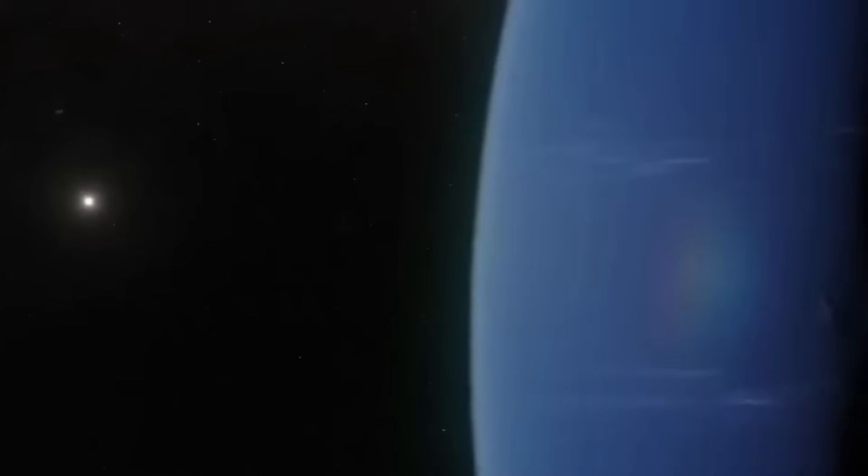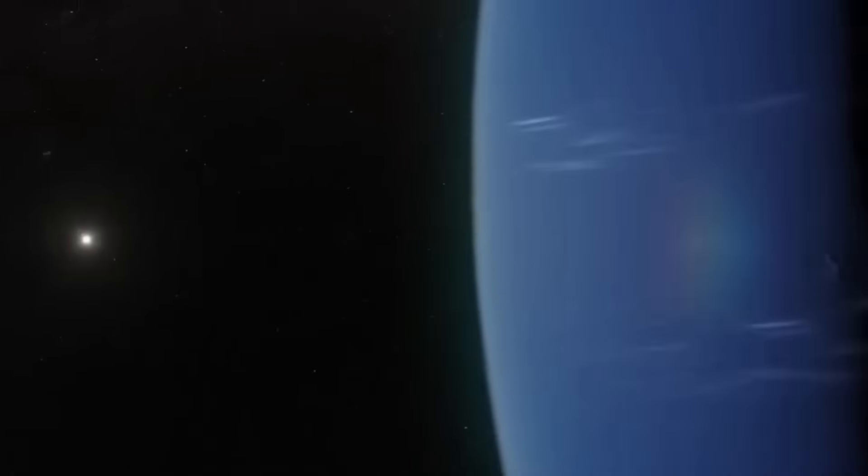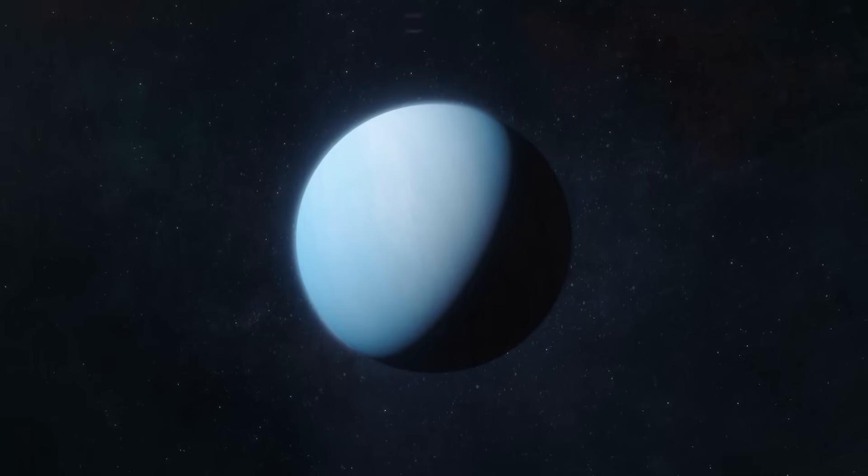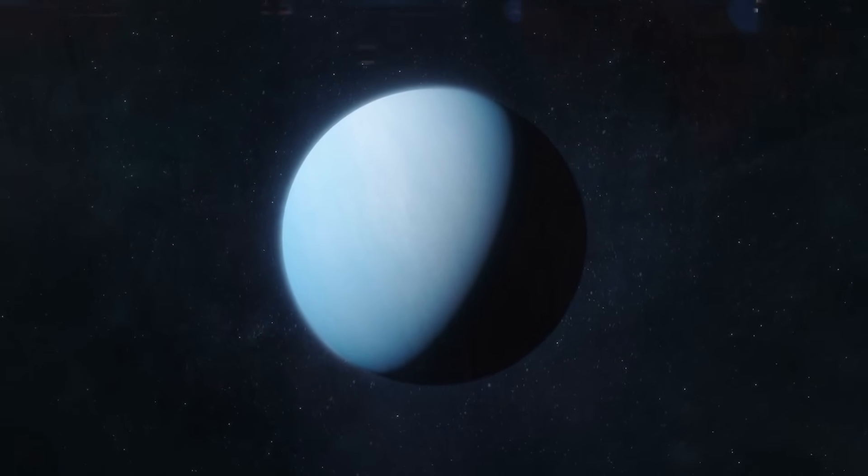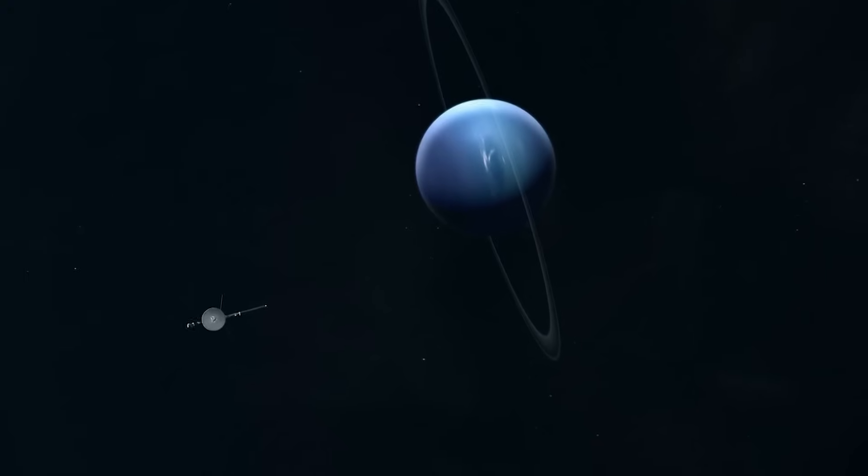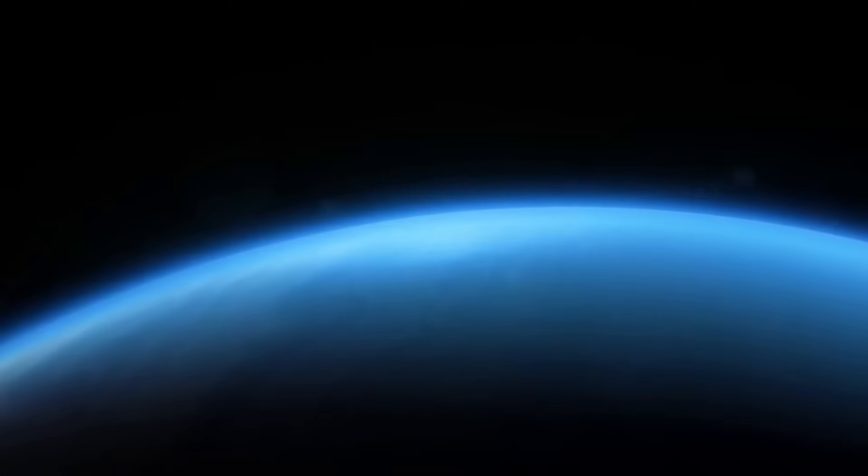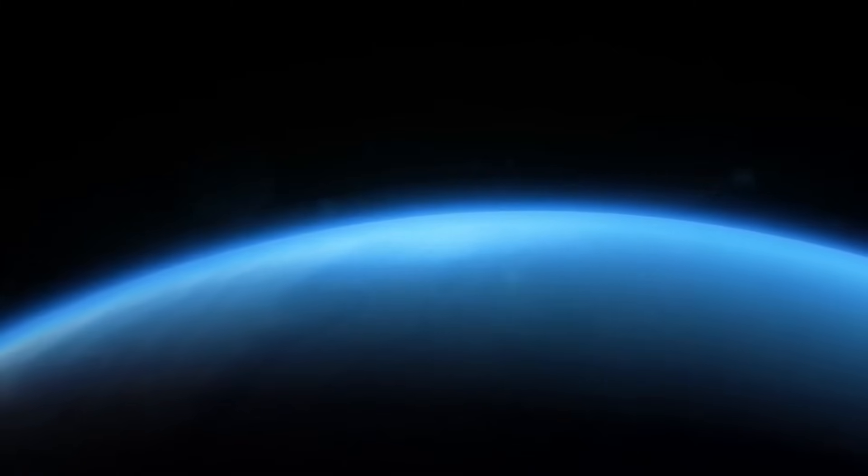Another shock came when Webb mapped Neptune's rings. Yes, rings. Though dim and diffuse, Neptune does possess a system of rings that have been difficult to study in detail due to their distance and faintness. Webb changed that. It revealed patterns within the rings, gaps, clumps, and arcs that defied gravitational expectations.